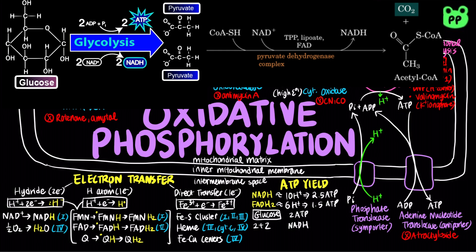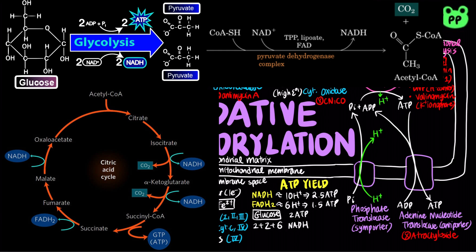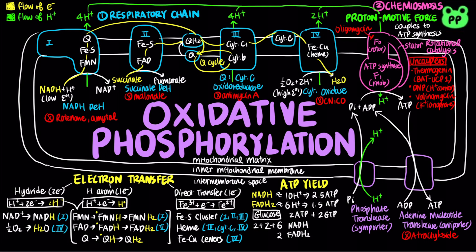The oxidation of glucose to carbon dioxide produces 2 ATP and 2 NADH from glycolysis, 2 NADH by pyruvate dehydrogenase, and 6 NADH, 2 FADH2, and 2 GTP from 2 rounds of the citric acid cycle, making a total of 2 ATP, 2 GTP, 10 NADH, and 2 FADH2 per glucose. Each GTP is equivalent to 1 ATP, 10 NADH is equivalent to 25 ATP, and 2 FADH2 is equivalent to 3 ATP. Therefore, the total ATP yield of a glucose molecule is about 32 ATP.